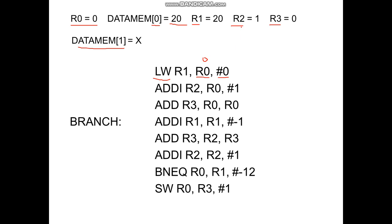Then we need to make R2 equal to 1. For that we don't need any load instruction — we can use the add immediate instruction itself: add immediate R2, R0, hash 1. Since R0 is 0, 0 plus 1 becomes 1. Similarly for R3, we are going to add R3, R0, R0. Since both values are 0, R3 also becomes 0.